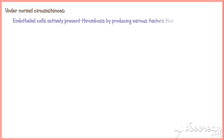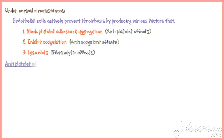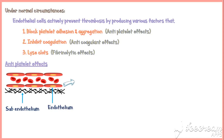Under normal circumstances, endothelial cells actively prevent thrombosis by producing various factors that block platelet adhesion and aggregation, inhibit coagulation, and lyse clots. These are called antiplatelet, anticoagulant, and fibrinolytic effects respectively. Endothelial cells constantly secrete nitric oxide and prostacyclin, which inhibit platelet adhesion and aggregation, and thereby prevent thrombosis.